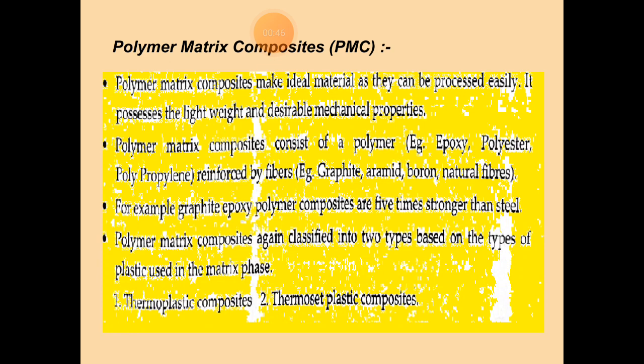In the last lecture, we became familiar with polymer matrix composites. Now, in detailed discussion, polymer matrix composites make ideal materials as they can be processed easily. They possess lightweight and desirable mechanical properties. Polymer matrix composites consist of a polymer — for example, epoxy, polyester, polypropylene — reinforced by fibers, for example, graphite, aramid, boron, and natural fibers. Graphite-epoxy polymer composites are five times stronger than steel.